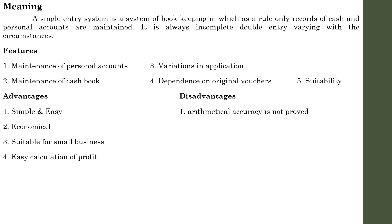Next: Disadvantages. We know that Single Entry System consists of a lot of issues and flaws. Let us pinpoint some of the main demerits or disadvantages. First disadvantage: Arithmetical accuracy is not proved, because since the two aspects of each transaction are not recorded, the trial balance cannot be prepared. In Single Entry System, we cannot prepare a trial balance because we are not preparing proper ledger accounts. Since there is no trial balance, we cannot check the arithmetical accuracy of books of accounts. In general, arithmetical accuracy of a Single Entry System cannot be proved. That is an important issue.